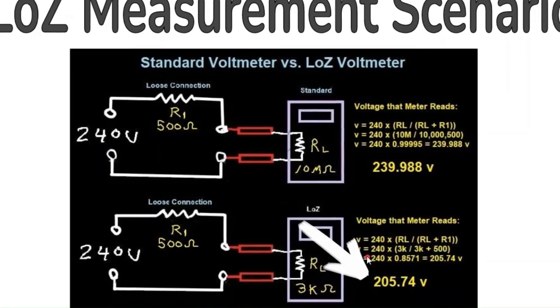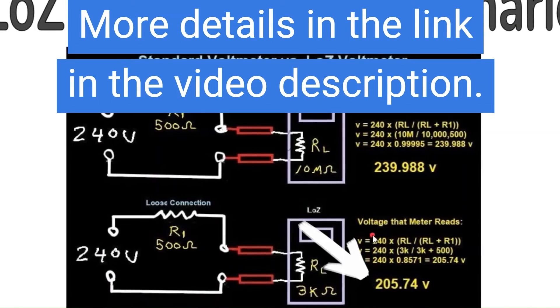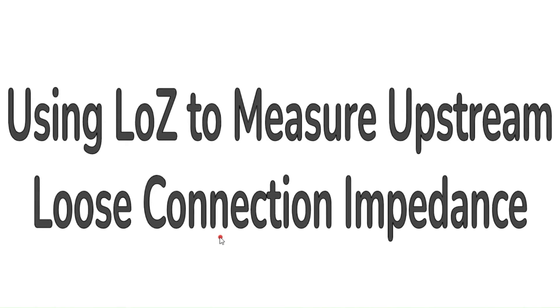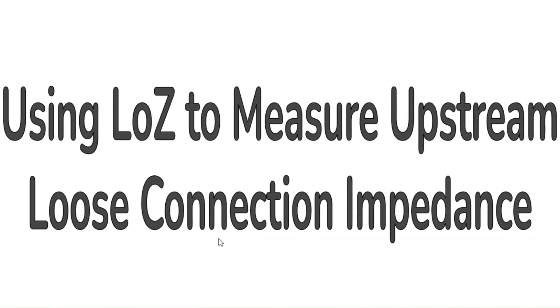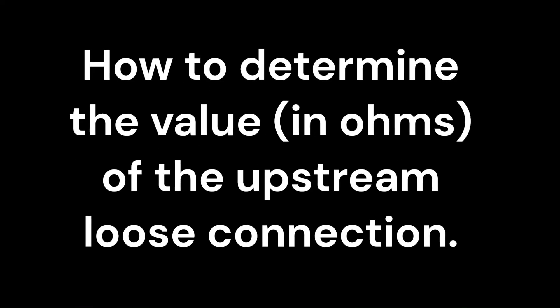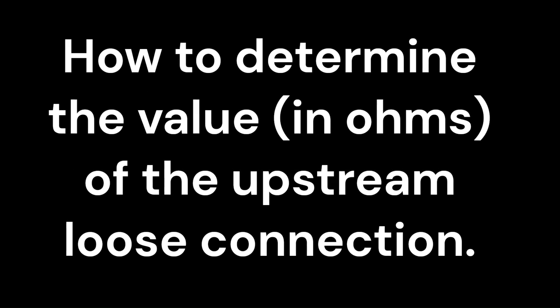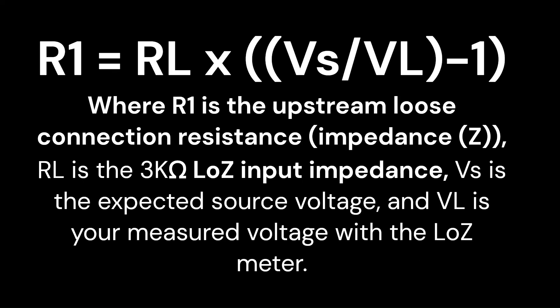Details on how this works can be found in the link in the description of this video. You can even use the low Z meter to tell you the value in ohms of the upstream loose connection. In our example, the upstream loose connection was 500 ohms. There is a formula that you can use to determine that value if you are in the field and would like to give a follow-up electrician details about the voltage source failure.